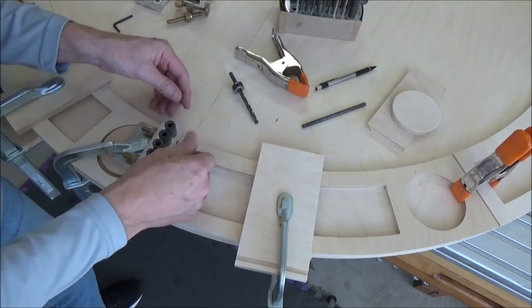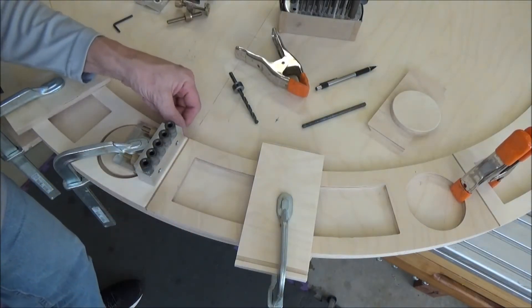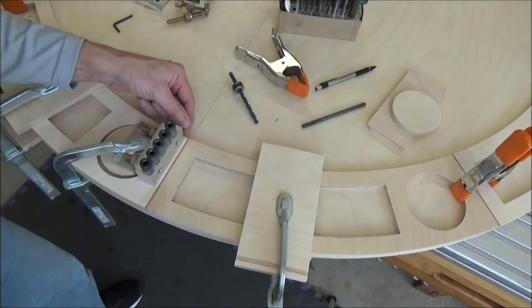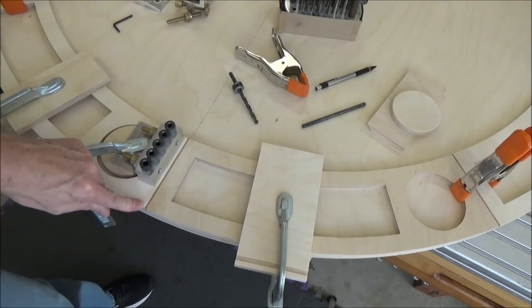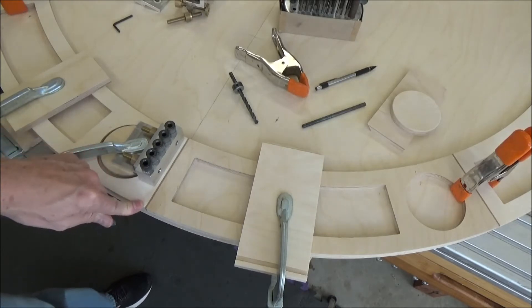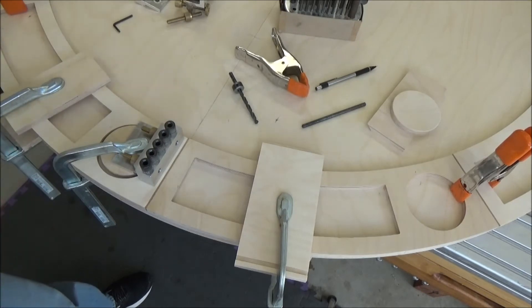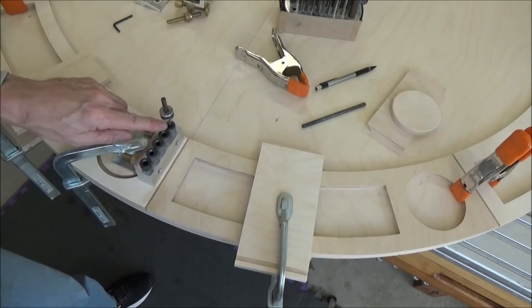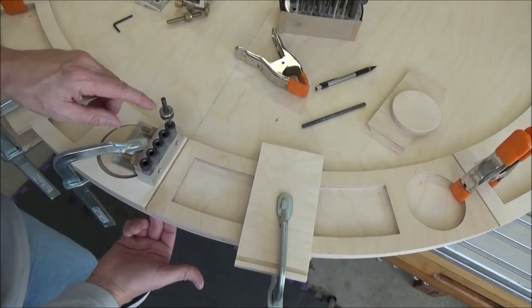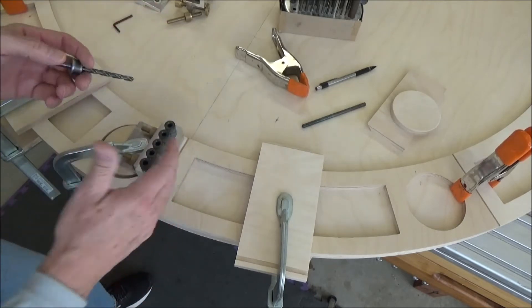Then I've got my dowel jig and I'm just eyeballing this because there's really no way to set it up. I'm going about an eighth of an inch in from the line and an eighth of an inch in from the inner circle. I've got my drill bit set to the proper depth so I don't punch through but I do get maximum depth for these pins.